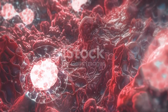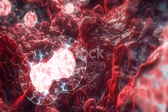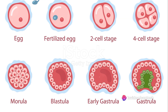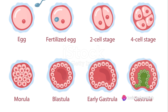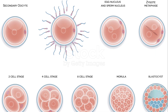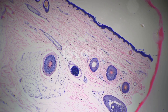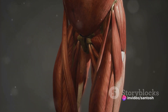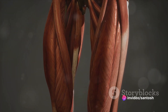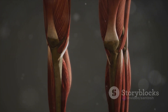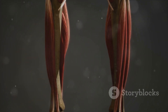The final stage in this journey is the gastrula stage. The blastula undergoes gastrulation, a process of dramatic reorganization. The cells of the blastula rearrange themselves into three layers, or germ layers: the ectoderm, mesoderm, and endoderm. Each of these layers will give rise to different parts of the organism's body. The ectoderm forms the skin and nervous system, the mesoderm creates muscles and bones, and the endoderm generates the digestive and respiratory systems.